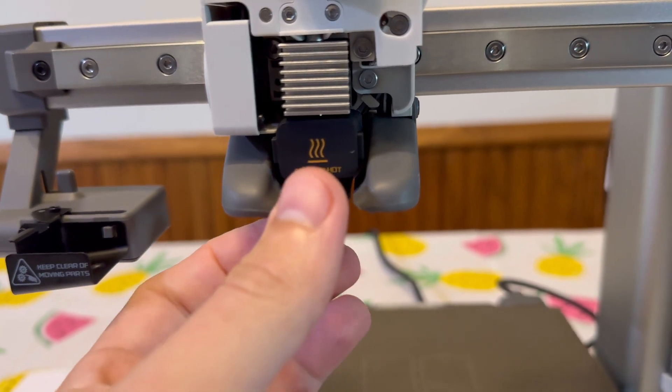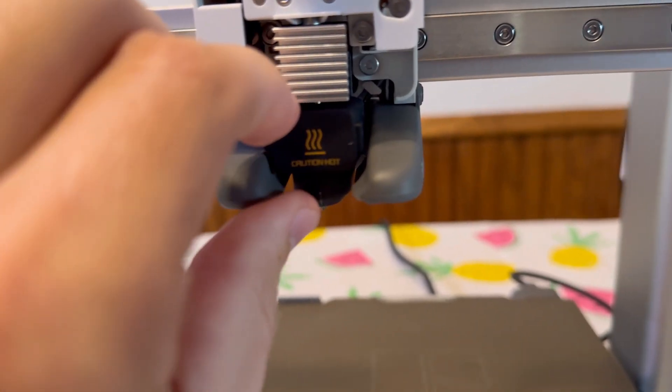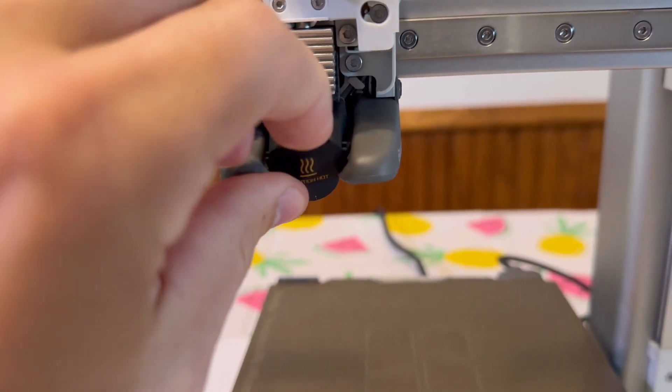Next step, we need to remove this little rubber housing over the nozzle end down here. So just peel it back like so. There we go.